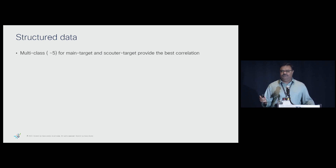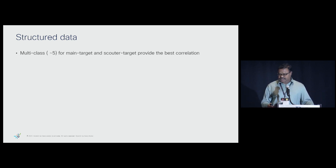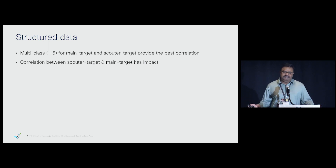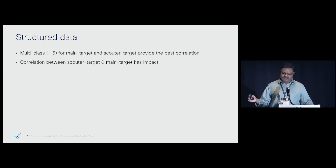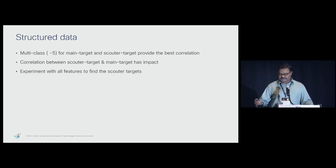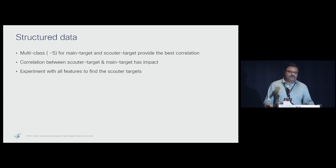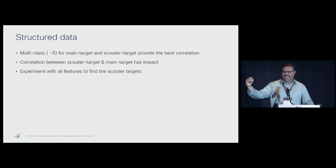This is not the same case when one of them is binary. Binary variables are not giving us that level of signal, nor are continuous variables. The correlation between the Scouter's target and the main target also has an impact. Typically we pick the feature variable with the most correlation with the target as the Scouter, but if that is not a multi-class variable, you have to look at other variables too. We tend to experiment with all features to find the best Scouter variable.